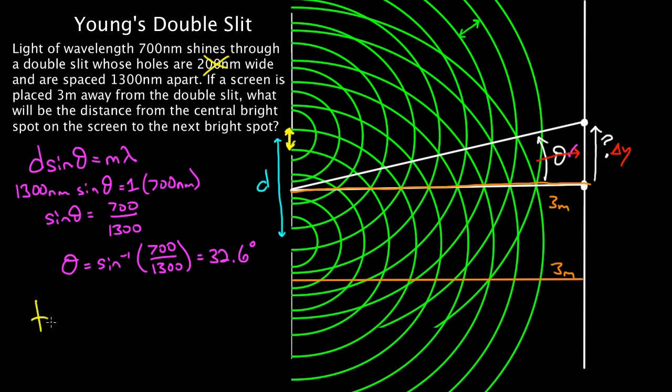I know how to do that. Tangent theta equals opposite over adjacent, and our opposite is delta y over three meters in this case. So if I solve this for delta y, I'm going to get delta y equals, multiply both sides by three meters, times the tangent of theta.